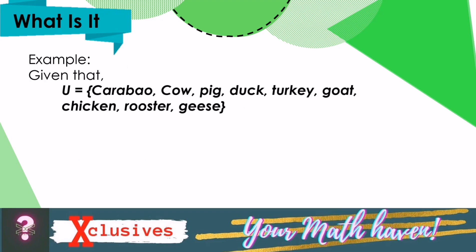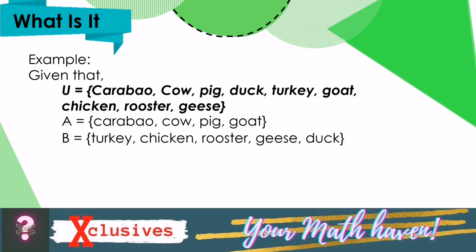Given that U is our universal set — the farm animals in the Philippines — and set A is the four-legged animals, and set B is the set of two-legged animals, we could say that A is a proper subset of the universal set, because all the elements in set A are found in the universal set.